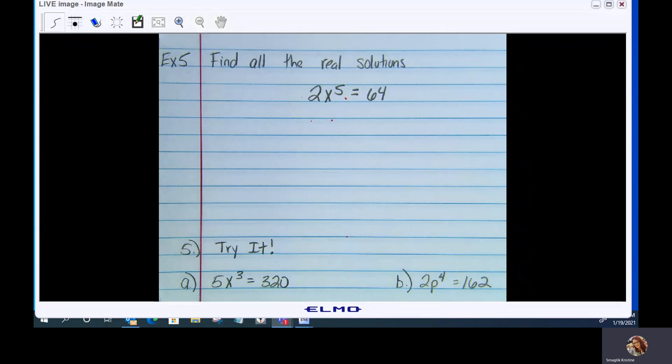Let's take a look at topic 5.1, example 5. We're going to find all the real solutions. The process you're going to use here, you're still going to use all your properties of equality that you've always used whenever you're solving for a variable. We just kicked it up a little notch because you're going to have some higher order exponents to solve. So here we go.